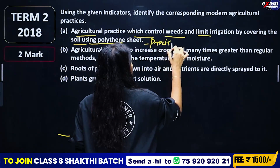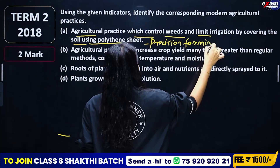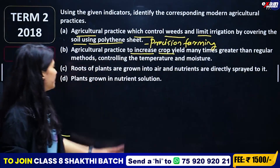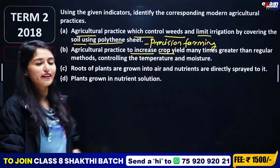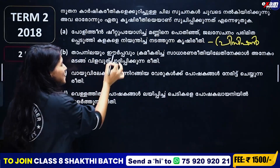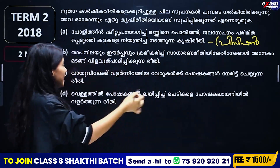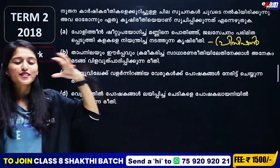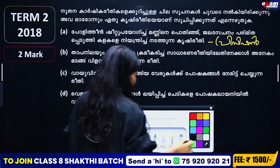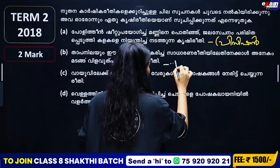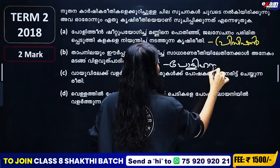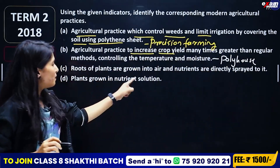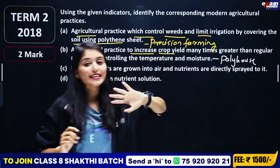It's called polythene sheet cover. Precision farming. Agricultural practice to increase the crop yield many times greater than regular methods — controlling the temperature and moisture. This is polyhouse farming. Yes, we use polythene. Yes, it's polyhouse. Polyhouse farming. Polyhouse is where the roots of plants are grown into air and nutrients are directly sprayed into it.